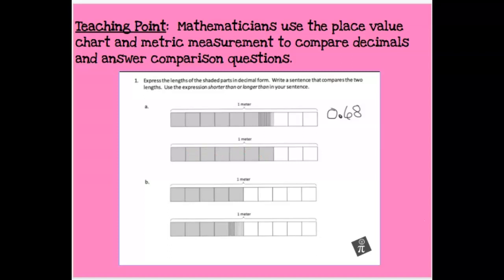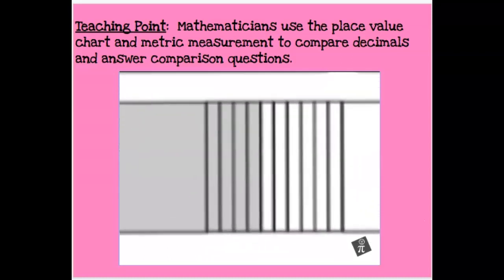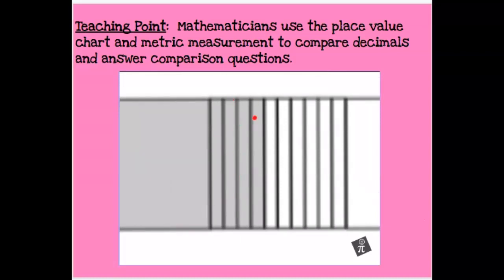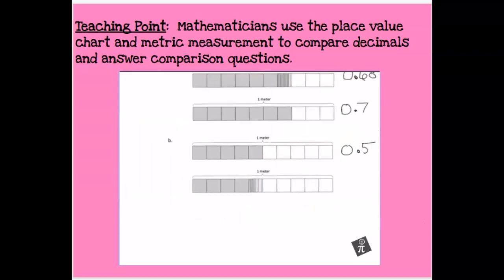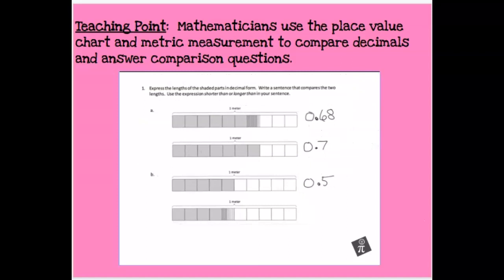The next one is straightforward: 1, 2, 3, 4, 5, 6, 7 — that's just seven tenths, 0.7. You can see that 0.7 is just barely larger than 0.68 — in fact larger by just two hundredths, a very tiny amount. Then here: 1, 2, 3, 4, 5 — that's 0.5, five tenths. And this last one has four tenths, then zooming in we count 1, 2, 3, 4 hundredths as well, so that becomes 0.44 — four tenths plus four hundredths.